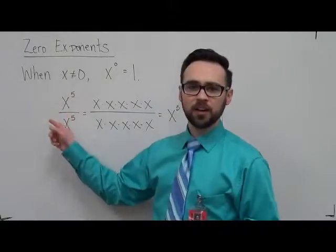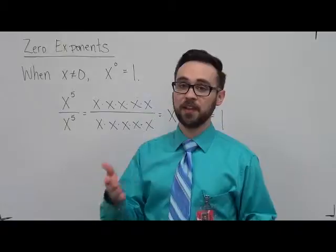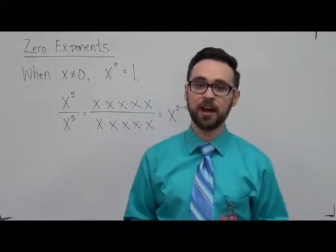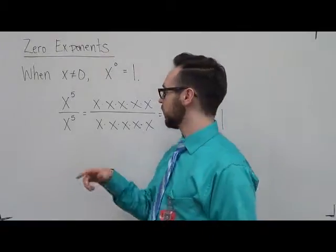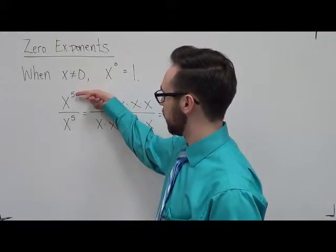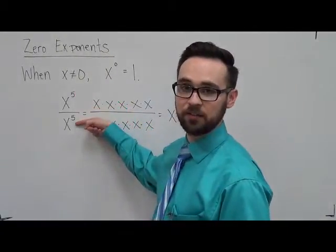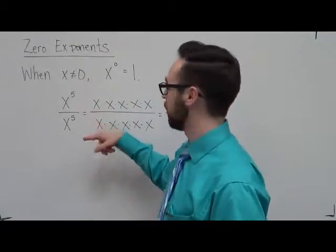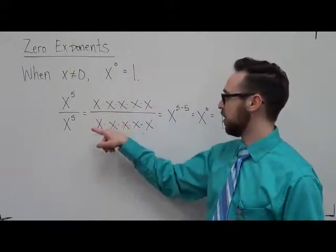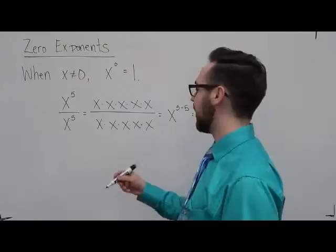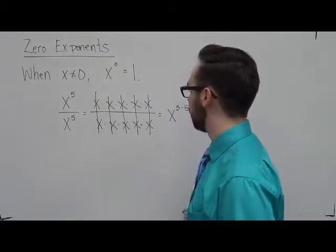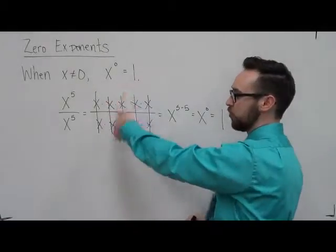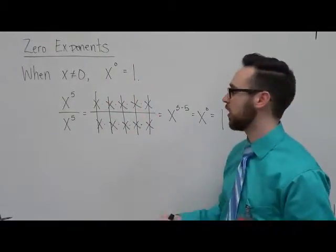Let's take a look at the scenario we learned in the last section when you are dividing monomials and you just subtract the exponents. When that happens, you have x to the fifth over x to the fifth. You do five minus five, right? So we have five on top and five on the bottom. Well, if I cancel those, I'm left with a whole bunch of ones, because when something is over itself, it equals one.